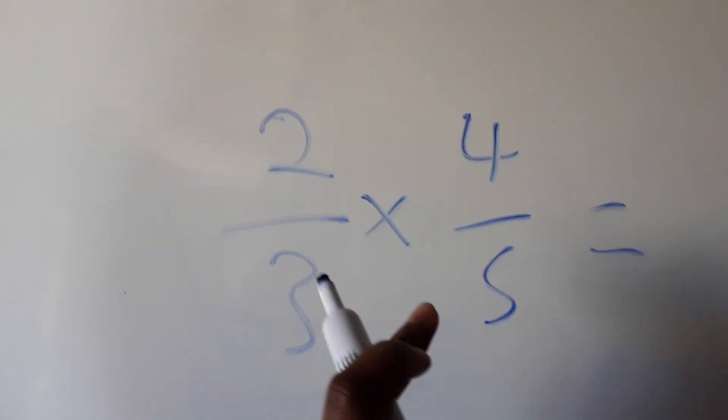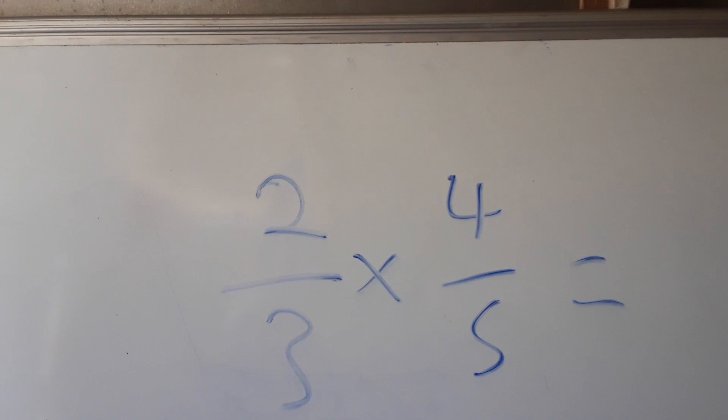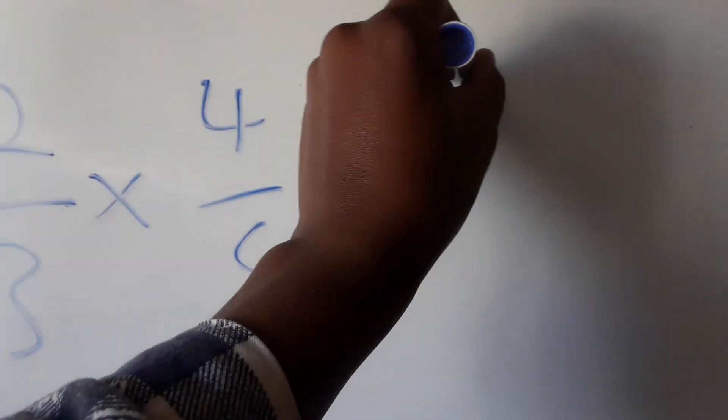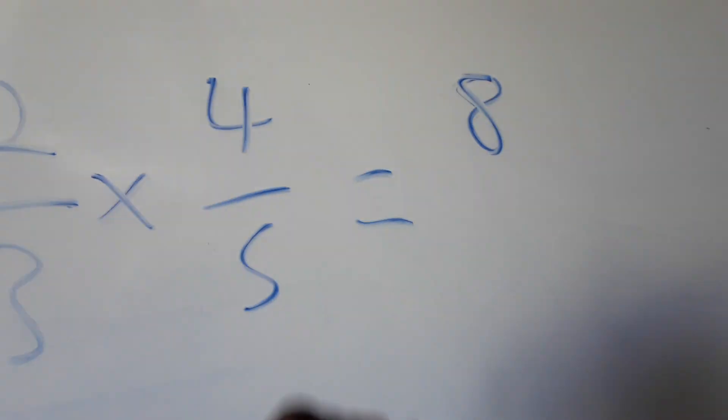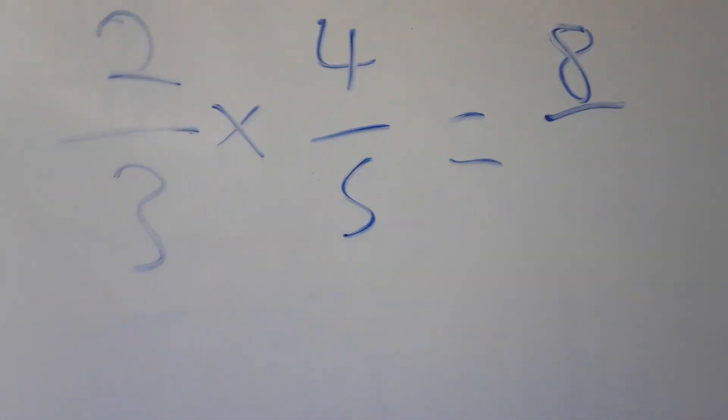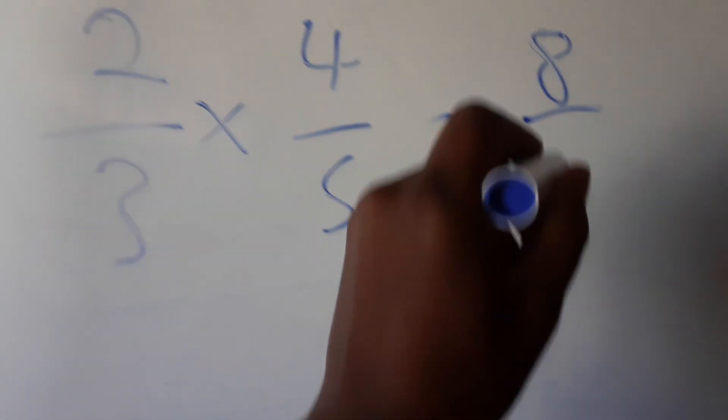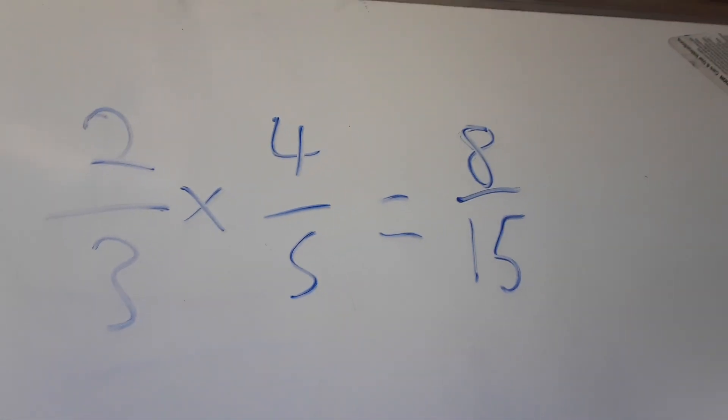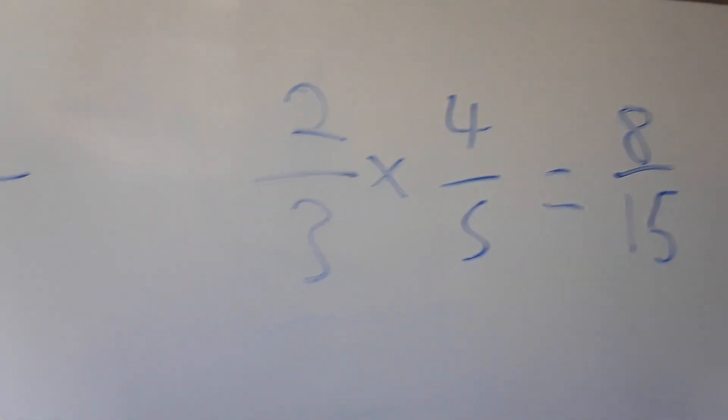We have 2 over 3 times 4 over 5. So 2 times 4 is 8, over 3 times 5, which is 15. So 8 over 15. This is how easy it is to multiply fractions.